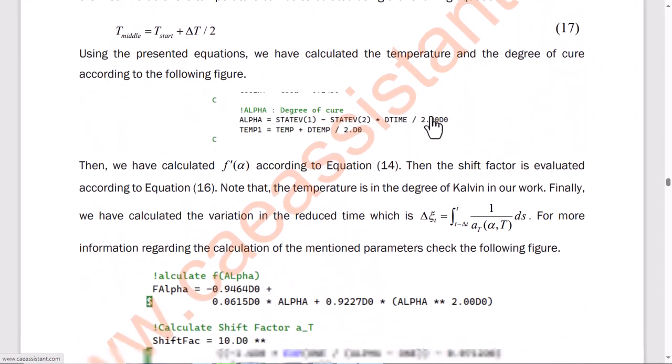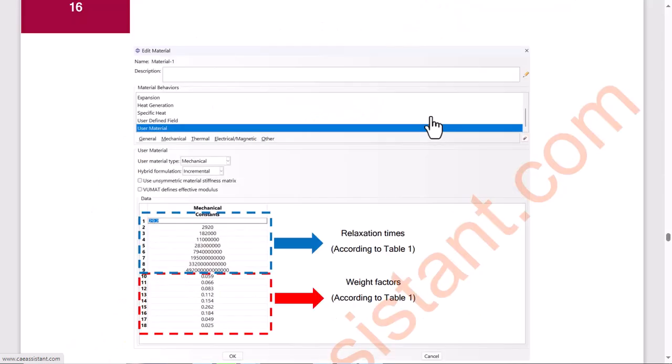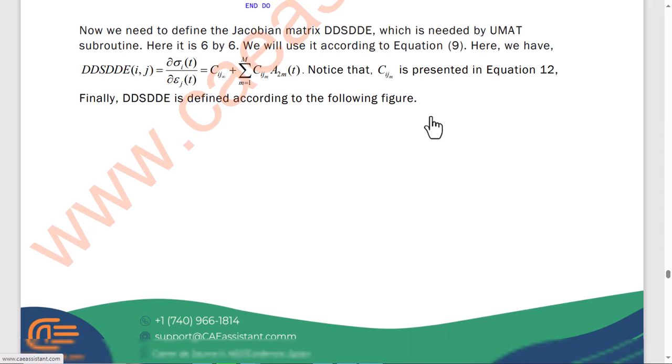Next, the shift factor was evaluated using Equation 16, and the relaxation times were calculated using Equation 13. Note that props represents the material properties defined in Abaqus CAE, as shown in the figure. Specifically, props 1 to 9 are set for the shift factors at the reference degree of cure, in accordance with Table 1. We then defined the Jacobian matrix DDSDE, a 6x6 matrix required by the UMAT subroutine. This matrix will be used as described in Equation 9.